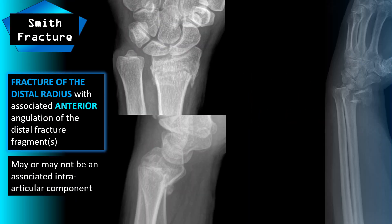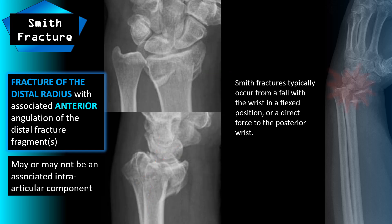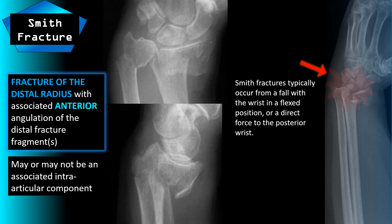A Smith fracture is a fracture of the distal radius with associated anterior angulation of the distal fracture fragments. These may or may not have an intra-articular component. They typically occur from a fall with the wrist in a flexed position or a direct force to the posterior wrist. Orthosurgical consultation is often appropriate, especially if there is articular involvement.